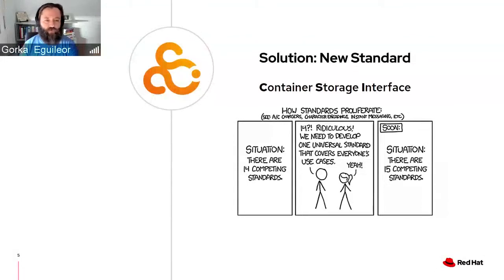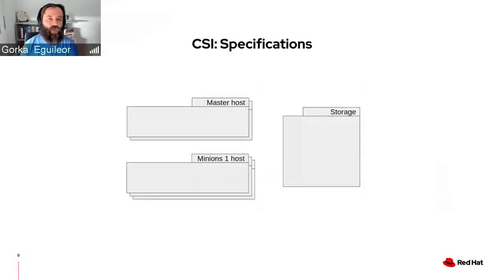There's always a new standard that tries to resolve and merge all previous ones. How is CSI different? First of all, it's an open standard that everybody can contribute to, and it's a joint effort between container platforms and storage vendors. The CSI specification defines an architecture where you have your controller nodes or master in Kubernetes and your minions or worker nodes, along with your storage.